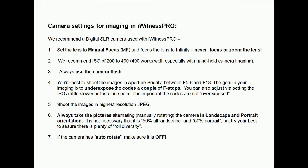The goal in your imaging is to underexpose the codes a couple of f-stops. You can also adjust via setting the ISO a little slower or faster in speed. It is important the codes are not overexposed. Shoot the images in highest resolution JPEG.